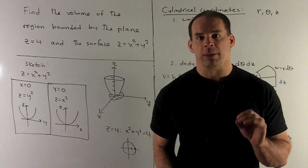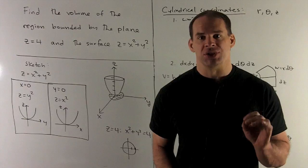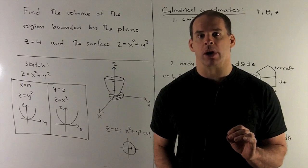Find the volume of the region bounded by the plane z equals 4 and the paraboloid z equals x squared plus y squared.